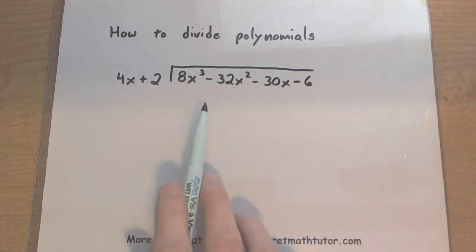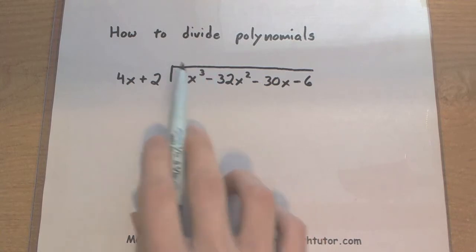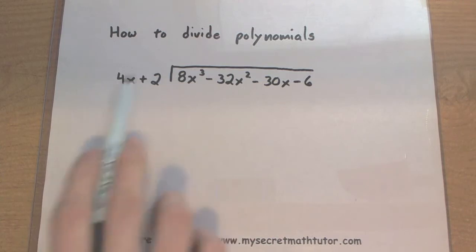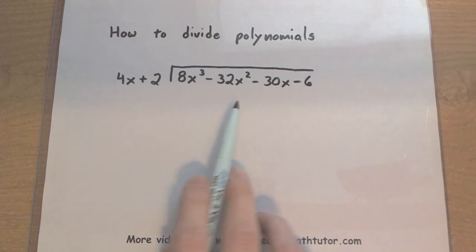So when we do this process, it has three steps. We're going to figure out our numbers up top. We're going to multiply those by our 4x plus 2. This will give us some new expressions that we can subtract away so that we have a new expression and we can repeat the process again. So let's see this all in action.